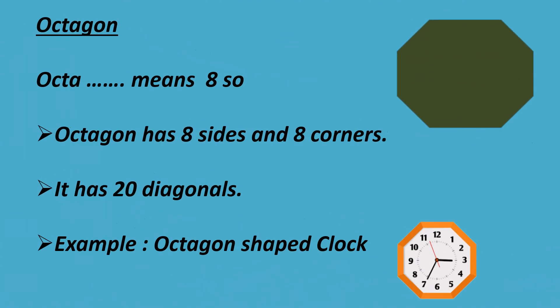Octa means eight. So, octagon has eight sides and eight corners. It has 20 diagonals. Example: octagon-shaped clock.